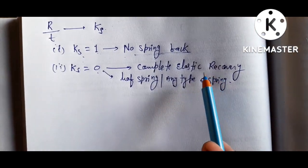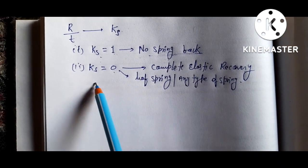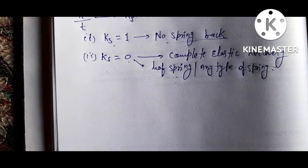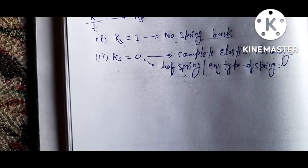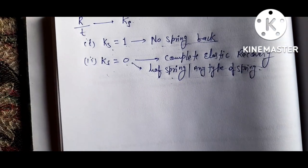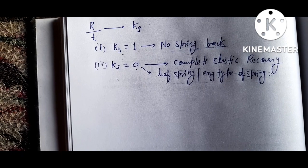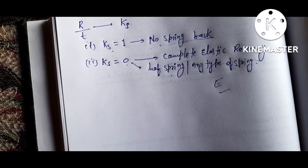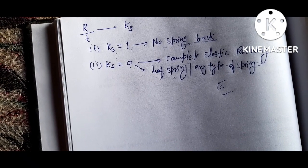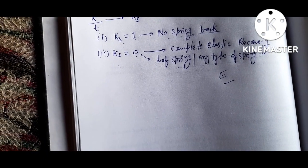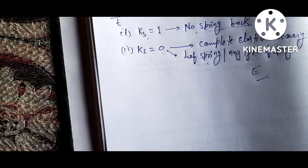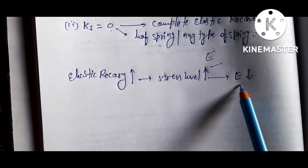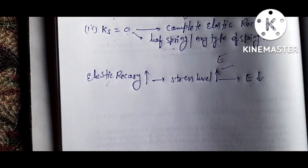Ks equals 1 means no spring back; Ks equals 0 means complete elastic recovery or complete spring back, and this happens in leaf springs or any type of spring. The amount of elastic recovery depends on the stress level and the modulus of elasticity E of the material. Elastic recovery increases with higher stress level and with decreasing elastic modulus E.